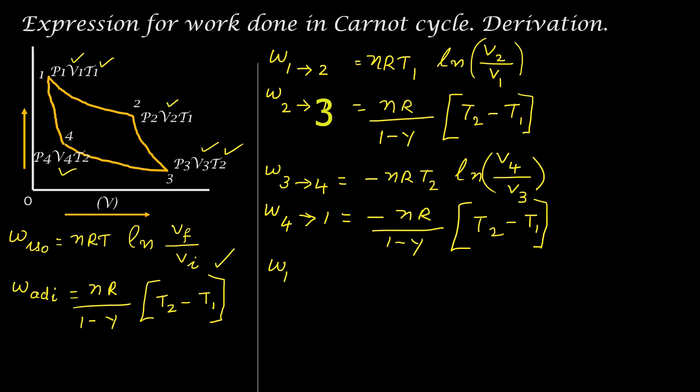Total work done is equal to work done 1 to 2 plus work done 2 to 3, plus negative work done 3 to 4, plus negative work done 4 to 1. For work done 2 to 3 and work done 4 to 1, the quantities are the same but one is positive and the other is negative, so they get cancelled.